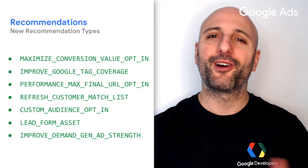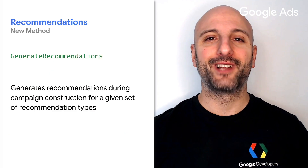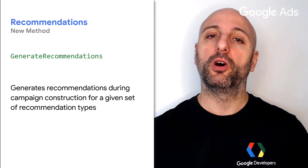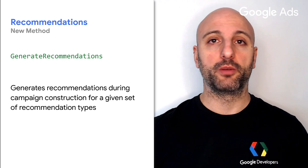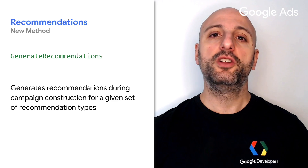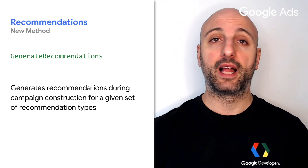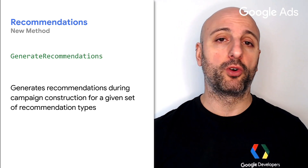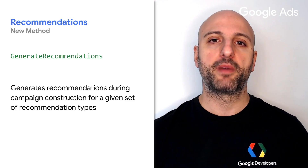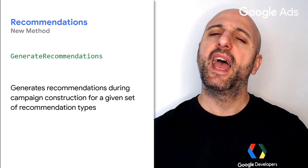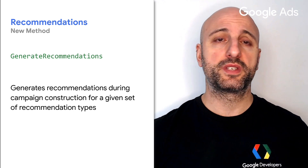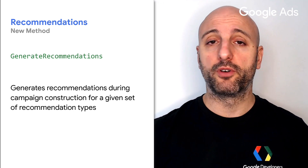But that's not all. Version 16 of the Google Ads API also introduces a new method in the recommendation service called generate recommendations, which you can use to retrieve recommendations for a campaign during its creation. This will help your users optimize campaign performance from the outset. It's available for search and performance max campaigns and for a subset of recommendation types. Check out the release notes and our recommendations guide for more information.